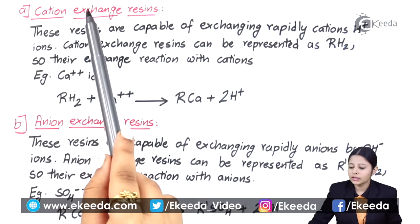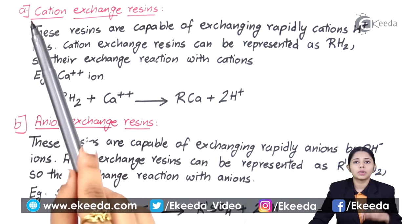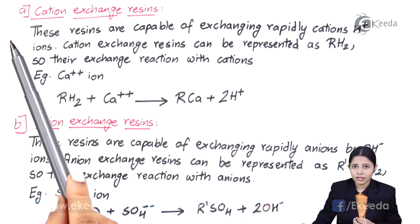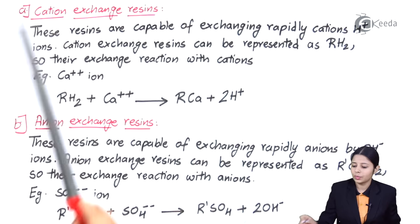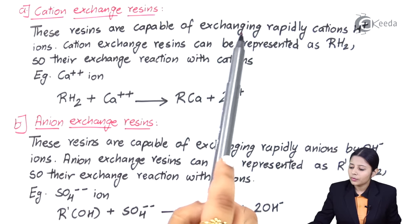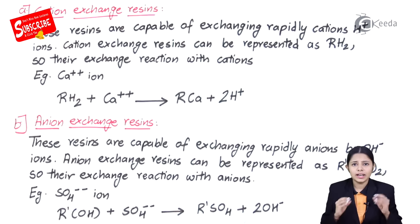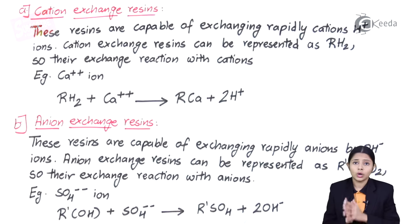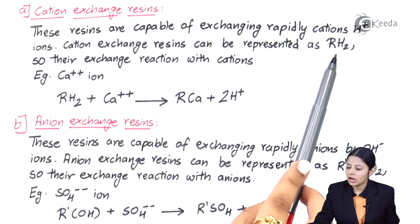First, let us study about the cation exchange resin. Cation is nothing but a positive ion. In this method, we are going to learn about positive ions and how they are used to remove the impurities of water. These resins are capable of exchanging rapidly with H+ ions, so whenever an H+ ion is present in water as an impurity, this cation can help remove it.